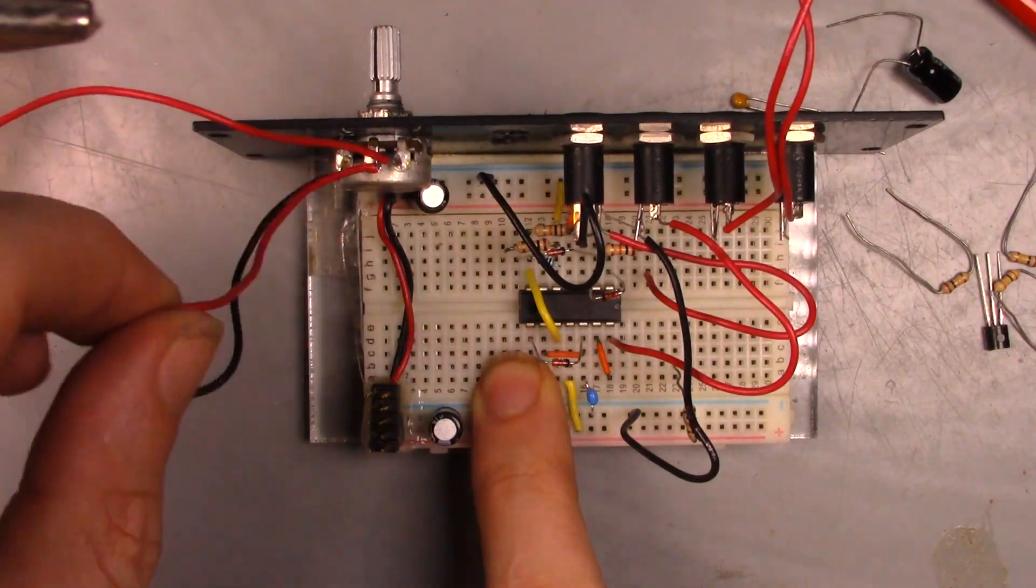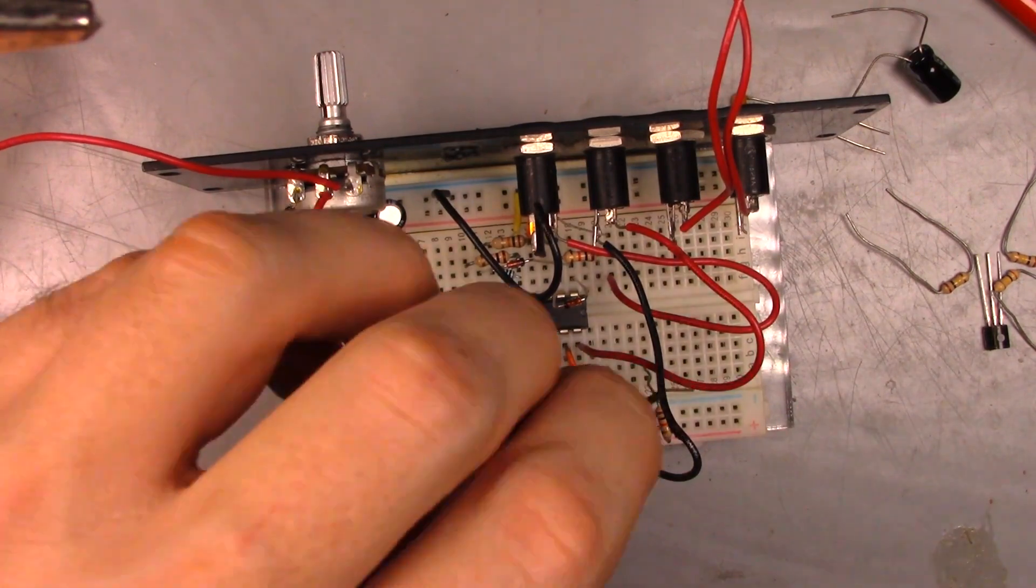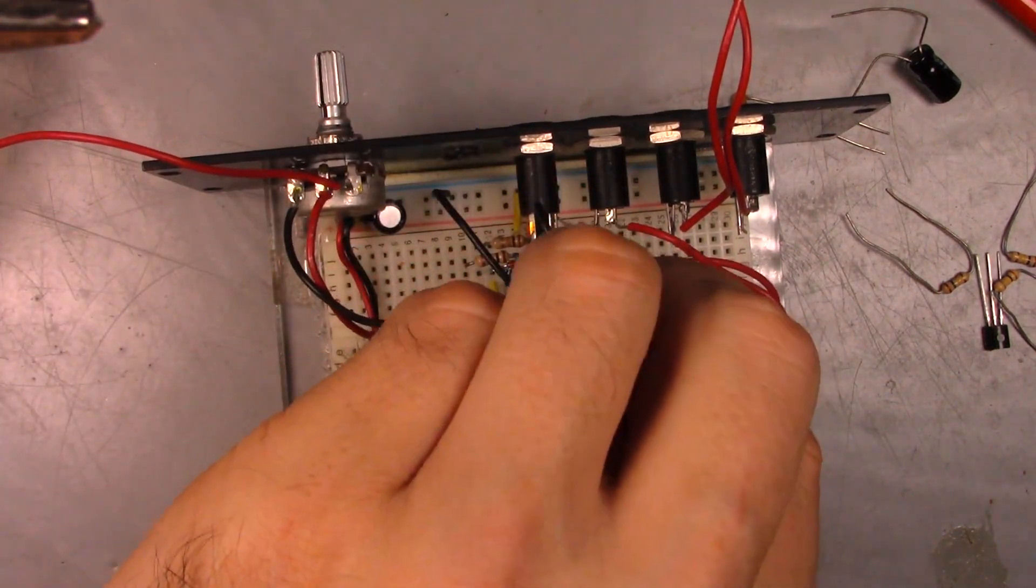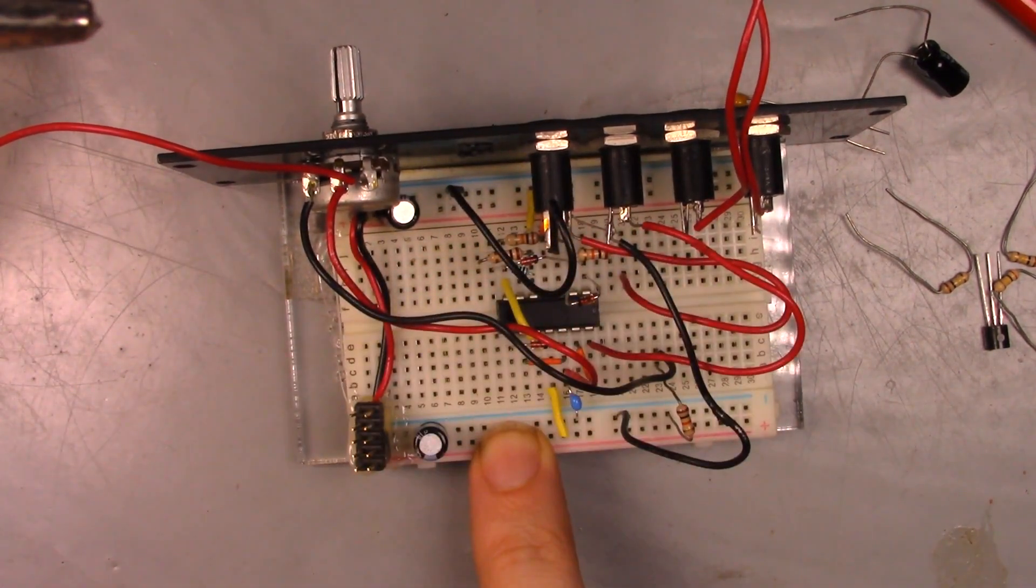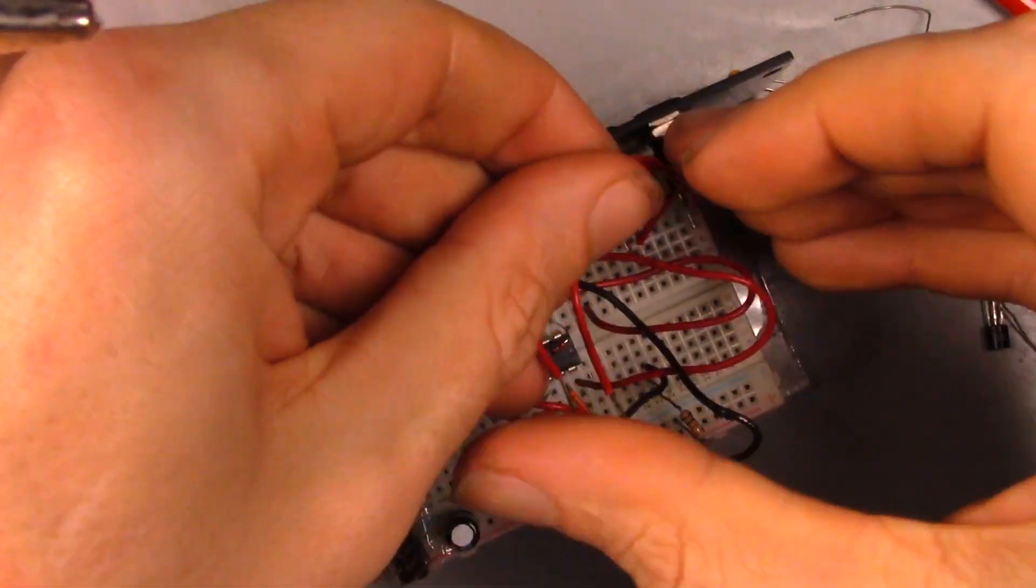Connections to the potentiometer. The unused wires can be folded neatly or plugged into unused buses.